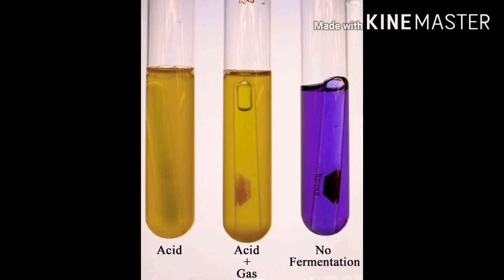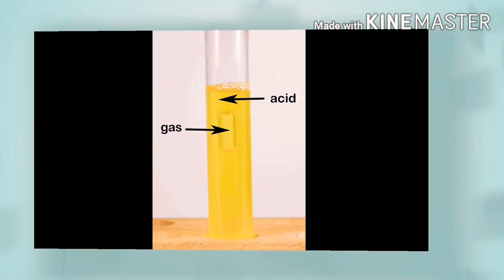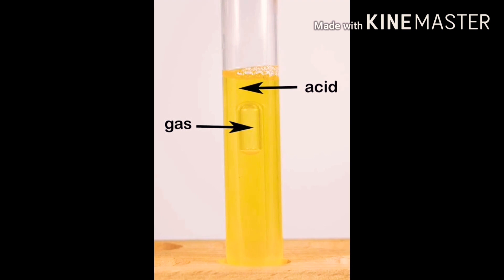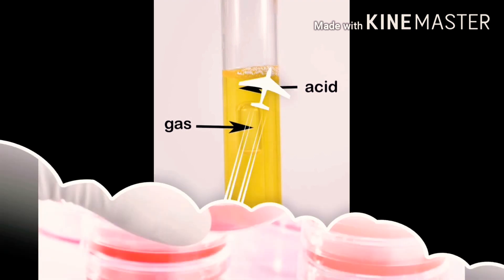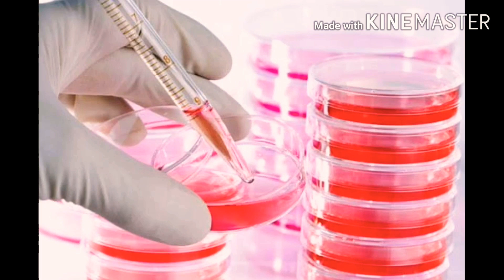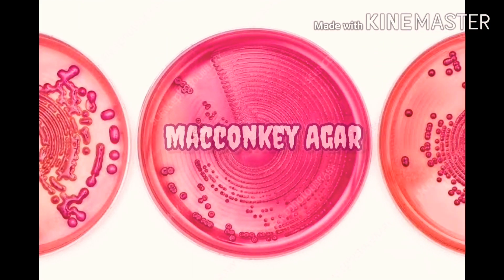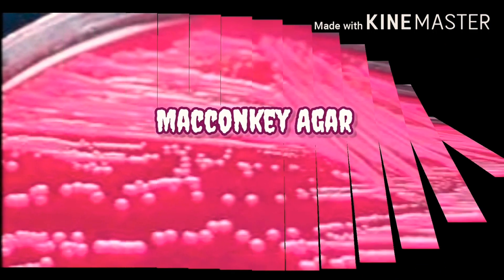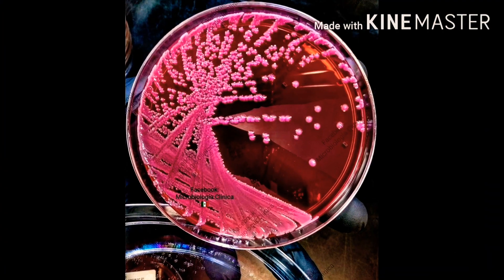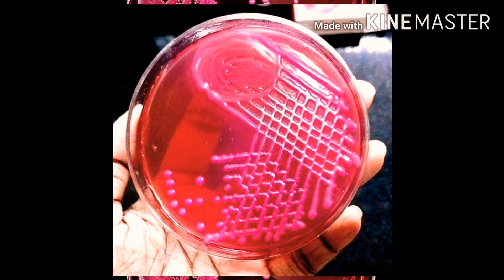Lactose fermentation is a very good way to identify and classify E. coli from non-lactose Enterobacteriaceae family members. That's why E. coli makes lactose broth and MacConkey broth very turbid during incubation, and appears as pink colonies on MacConkey agar and also on Endo agar due to lactose fermentation into acid, which changes the neutral red indicator of the media into a pink color.